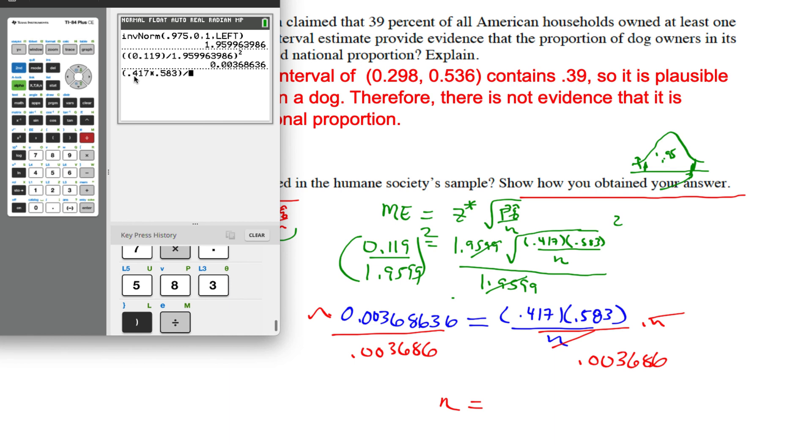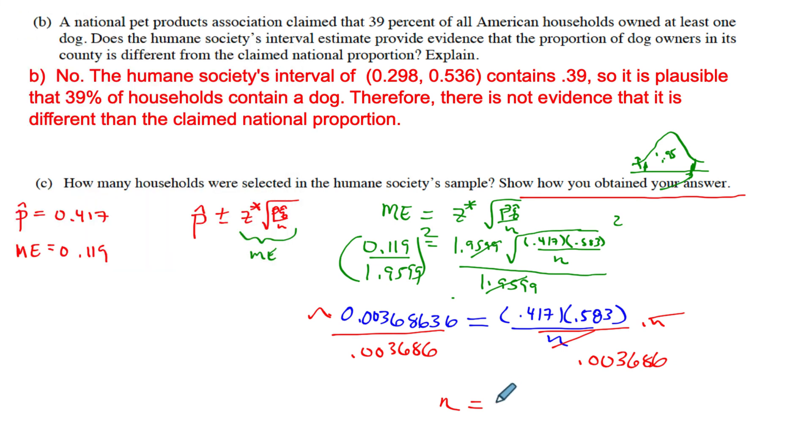If I divide this by 0.003686, I get 65.948. Remember when we're doing sample size, you can't have 0.948 people, so we're going to round that up to 66 people. How many households were used? Let's make a context statement and we're done. The humane society sampled 66 households for the sample. That's it. That is our margin of error/confidence interval question.